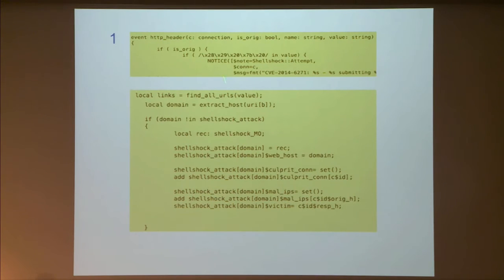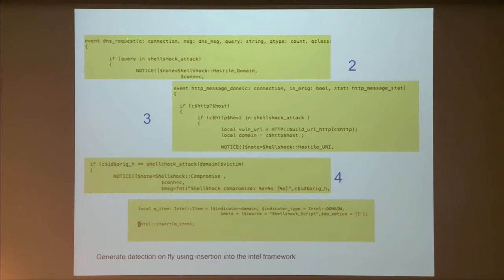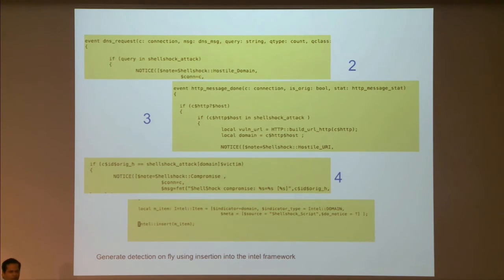The Shellshock policy was expanded with four additional alerts. First, the attempt detection from the stock community-supplied policy. Then: if the malicious URL (e.g., whirlpoolexpress.co.uk) embedded in the Shellshock header results in a DNS request for that domain, and then a successful HTTP GET request to it, you call it a Shellshock compromise — a much more comprehensive detection. The code creates a table keyed on the malicious domain extracted from the exploit header, then checks DNS request events and HTTP message done events.